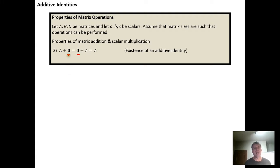The idea is that the additive identity matrix is simply the matrix that contains zeros as all of its elements.